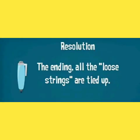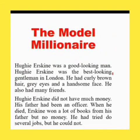After the climax comes falling action, where events gradually wind down and we begin to understand what will happen next. Then comes the final element: resolution — which is the ending point of the story. In the resolution, loose strings that were unclear in the story become clear, and all things are solved and the story ends.